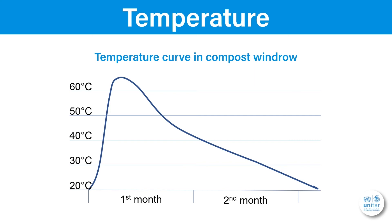By graphing compost temperature over time you can tell how far along the decomposition has progressed. A well-constructed compost system will heat up rapidly up to 65 degrees within two to three days. Then, as decomposable organic matter becomes depleted, the temperature begins to drop and the process slows considerably. If the temperature curve does not follow this trend, check your CN ratio and add other materials, or check your moisture content and either water the compost or add dry bulking material.